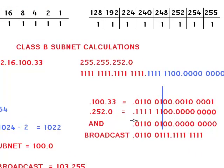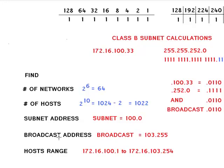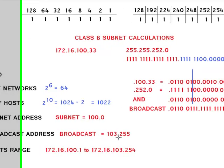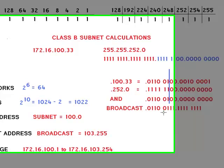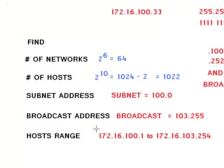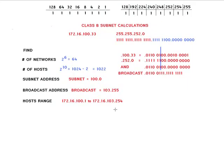To find the subnet address, do the AND operation between the two numbers in binary — the result converts to decimal as 100.0. To find the broadcast address, copy the bits within the mask and convert all zeros after the mask to ones — that gives 103.255. The host range is 100.1 to 103.254. I hope this video was informational. I will try to do class A subnetting very soon. Thank you, bye.